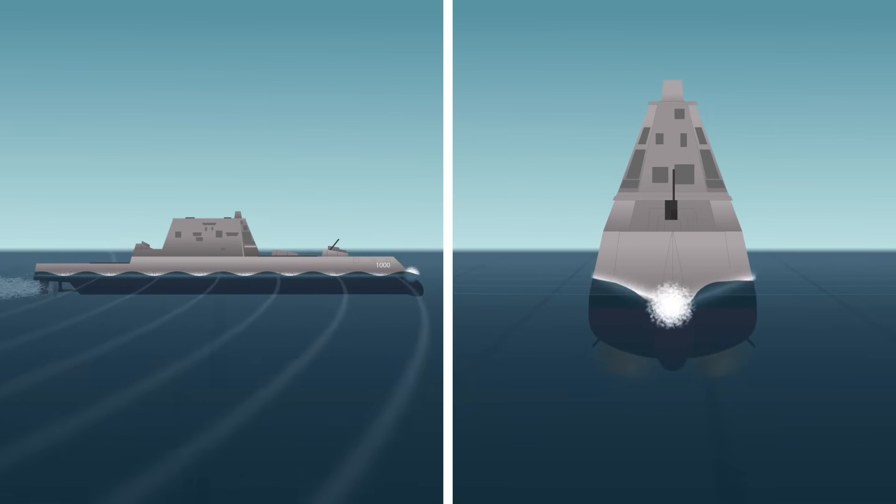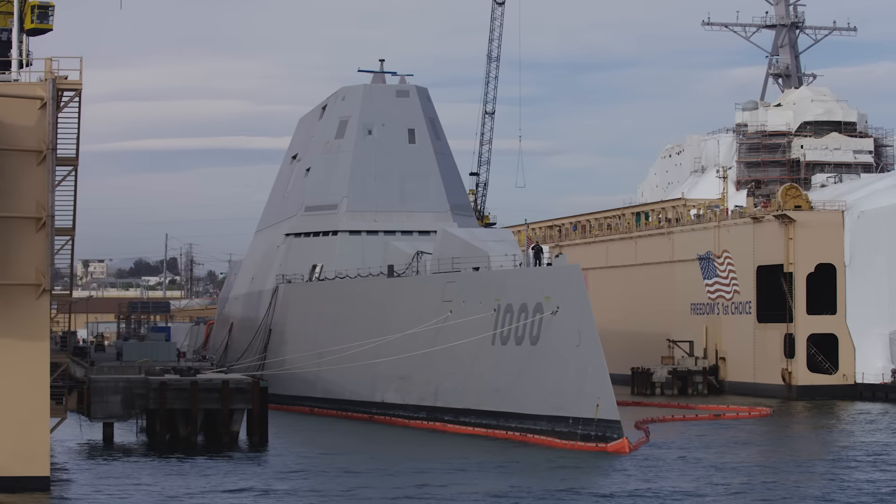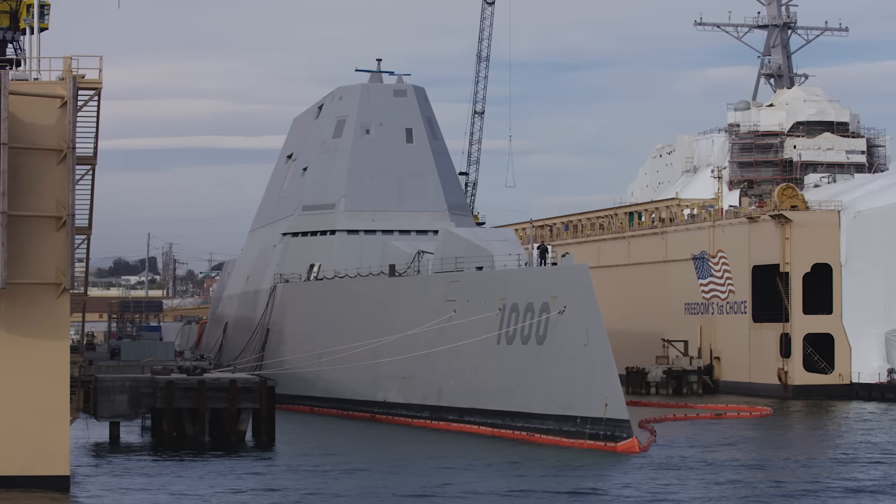In certain sea conditions, especially with waves coming from behind, the shape reduced the ship's ability to right itself. Simulations showed that the vessel could behave unpredictably, even dangerously, in following seas. These stability issues didn't emerge during construction. They were flagged during early model tests.